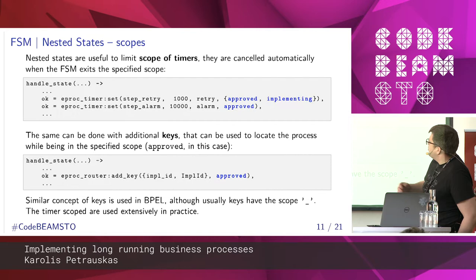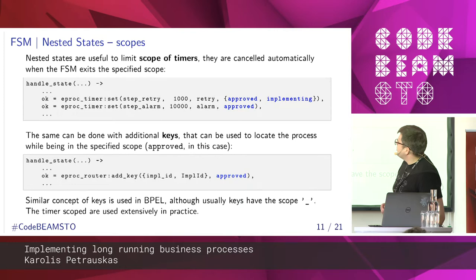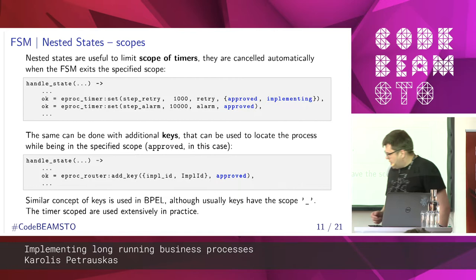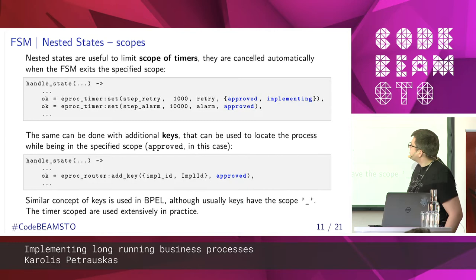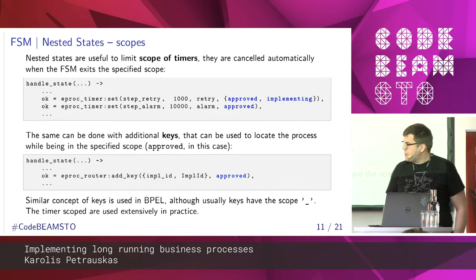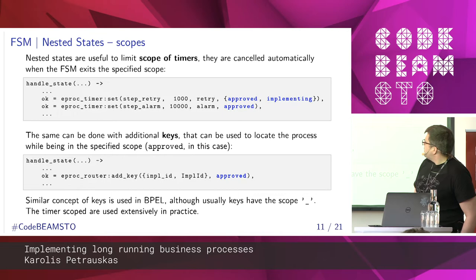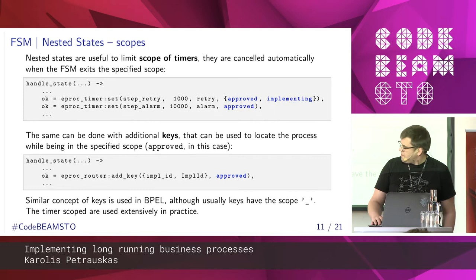The additional value of that structure for states is that you can have scoped attributes on that state machine. We have several attributes defined: timers, mostly used as timers, and also cases used for correlating messages to processes. We have several cases to set up a timer. One timer will be valid for the inner state — approved-implementing — and the second timer, step alarm, will be valid for the entire approved state, no matter which sub-region it is in. In the same way, a case can be assigned to the process.